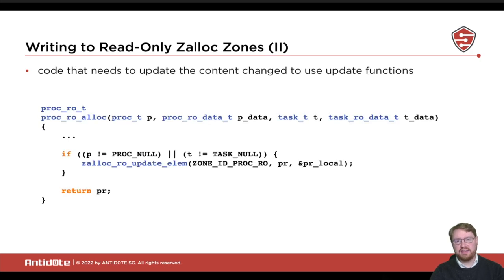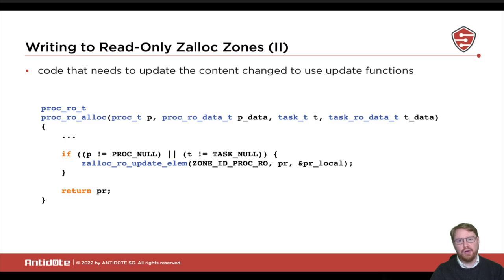Looking at a real-world example, we can see the proc_ro_alloc function and how it is actually written to. We're updating an element — the PR field — writing the locally filled-out data structure into that field, so after that we have the initial initialization of this field. If you want to modify a single field later, you would need to run zalloc_ro_update_field, specifying where the field is and how long it is. With this set of functions, it is no longer possible to corrupt this data from kernel land — you need to be in PPL to make modifications, but the code can still do so, only ever through these accessor functions and never through a simple kernel write.